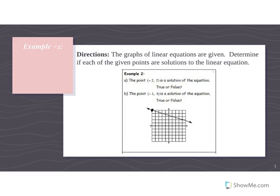Let's go to our next example — same directions, so just write Example 2. We're going to look at the point (-5, 5): go to the left five and up five. That point actually is on our graph, on our linear equation. So if a point is anywhere on that line, then it is a solution.